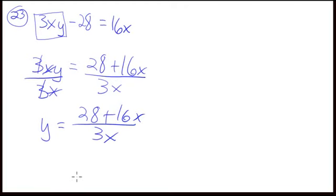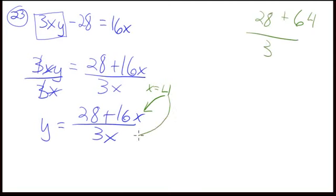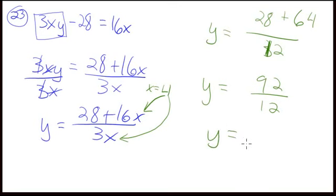And now they're saying if x is equal to 4, then find out what y is equal to. So, if I put a 4 in here for x, I'm saying x equals 4. So, 4 times 16 is 64, plus 28, over 3 times 4. That's 12. And y is equal to this stuff. Y equals, what are we going to get here? It's going to be 92 over 12.